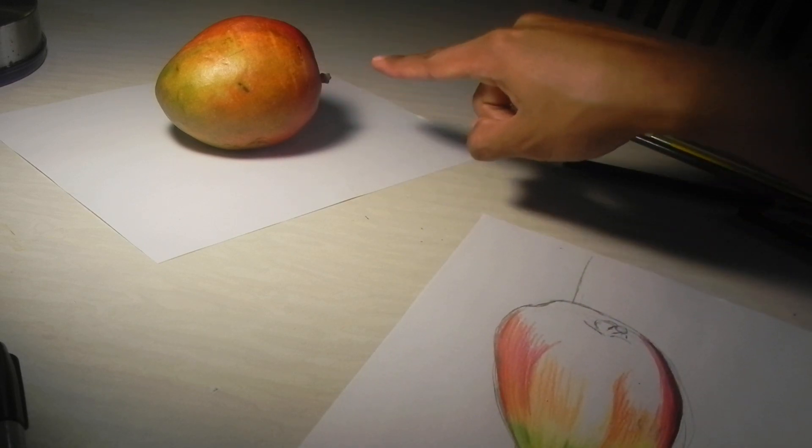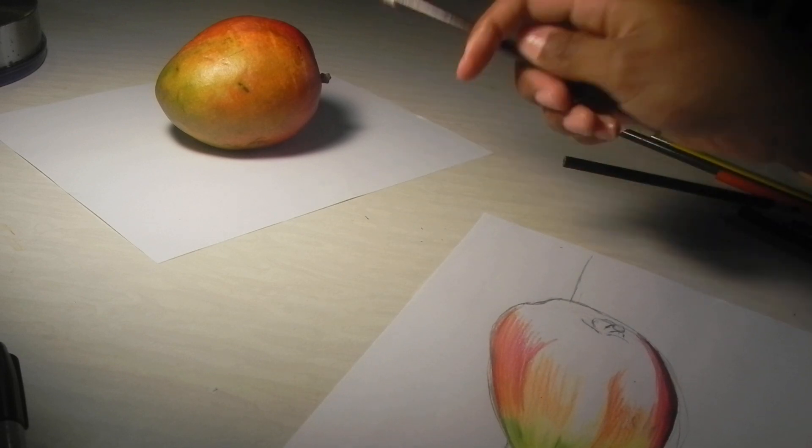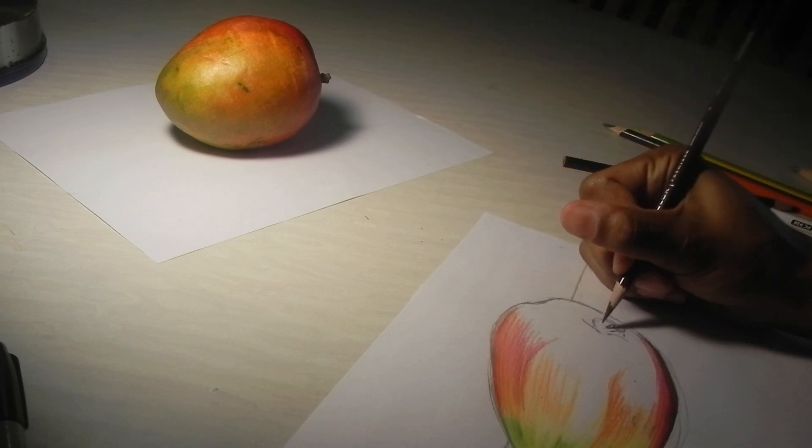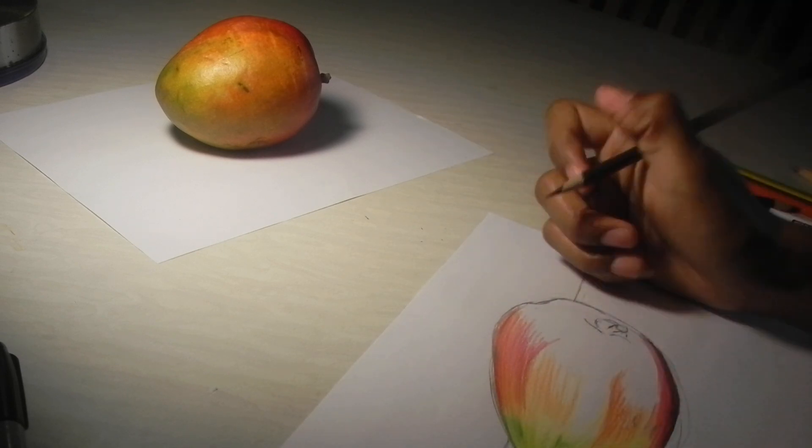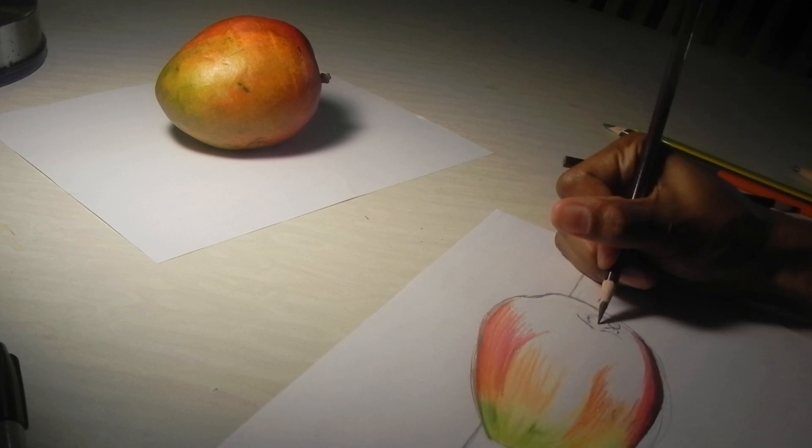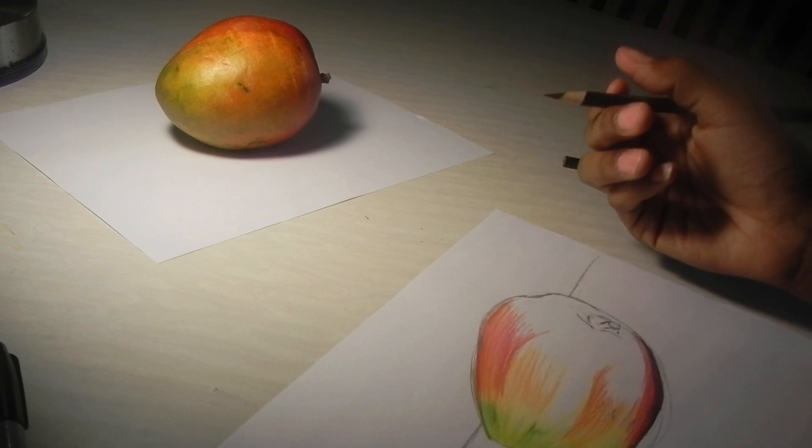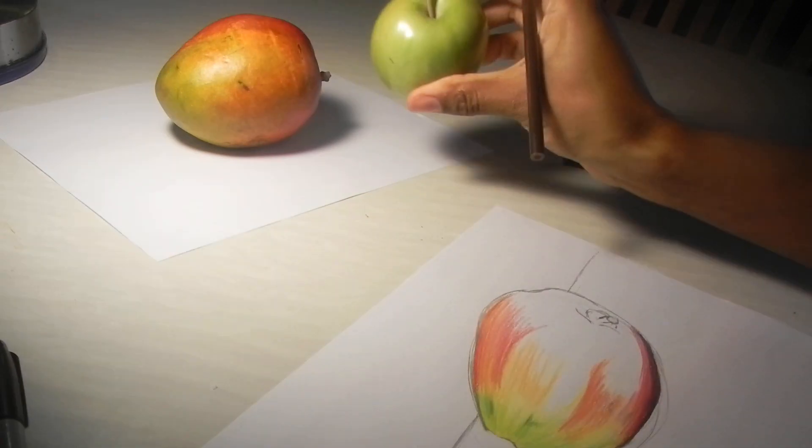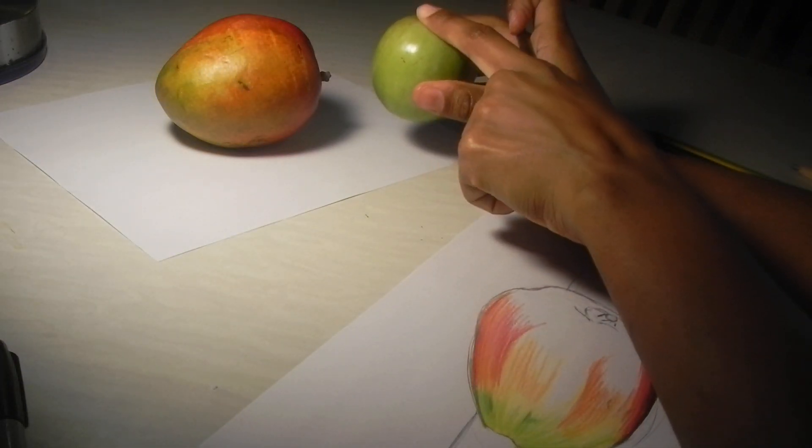And then when you get to this section here, you can see that it's pretty brown. So I would start with the dark brown. This is if you're doing a mango, but it applies to all fruits. You can see with an apple, it has an indentation up here as well.